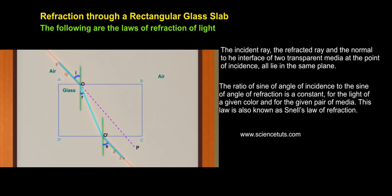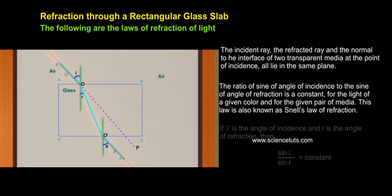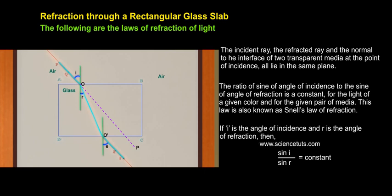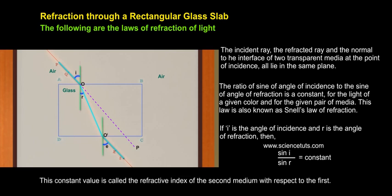The ratio of sine of angle of incidence to the sine of angle of refraction is a constant for the light of a given color and for the given pair of media. This law is also known as Snell's law of refraction. If I is the angle of incidence and R is the angle of refraction, then sine I by sine R equals to constant. This constant value is called the refractive index of the second medium with respect to the first.